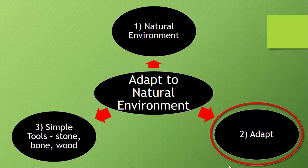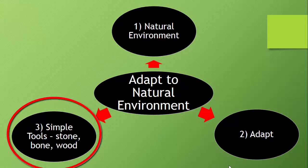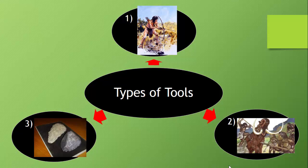One way hunter-gatherers adapted — bubble number three — is they made simple tools. They made these tools of stone, bone, and wood. They used these simple tools to create shelters, to hunt, and to make clothes. So what are some of the types of tools that they used?